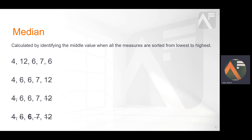For the same data set we used for the mean, the first thing we would need to do is put the data in order from the smallest to the highest. Then we'd find the value in the middle, which in this case is 6.